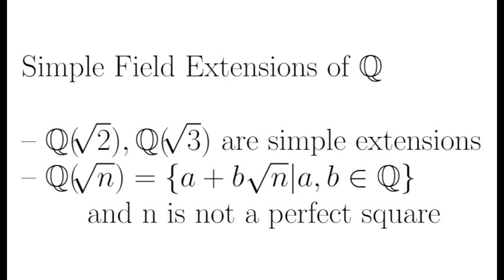For example, Q with root 2 adjoined is a field and simple extension of Q, as is Q with root 3 adjoined, and root n for any integer n that is not a perfect square.